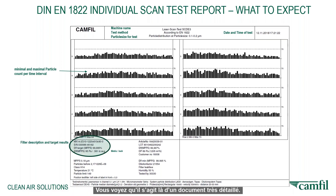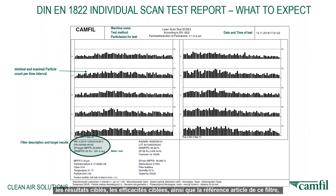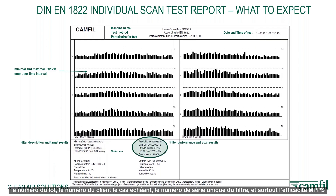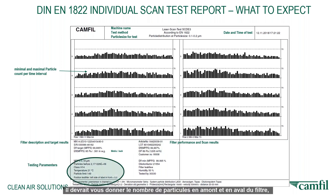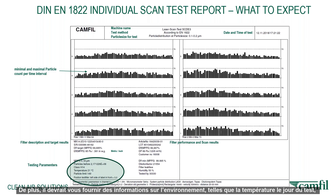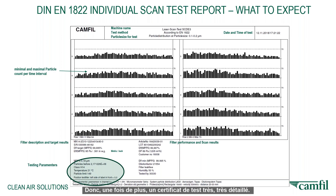It's quite a detailed piece of paperwork. It should give you the filter description, the target results, and the efficiency targets, as well as the article number, the lot number, the customer number if relevant, and a unique serial number for that filter. Importantly, it must include the efficiency at MPPS in order to determine the filter classification, and the number of particles before and after the filter to give you the filter class. It should also include environmental information such as the temperature on the day of the test, the position of the test filter, and items unique to that filter.